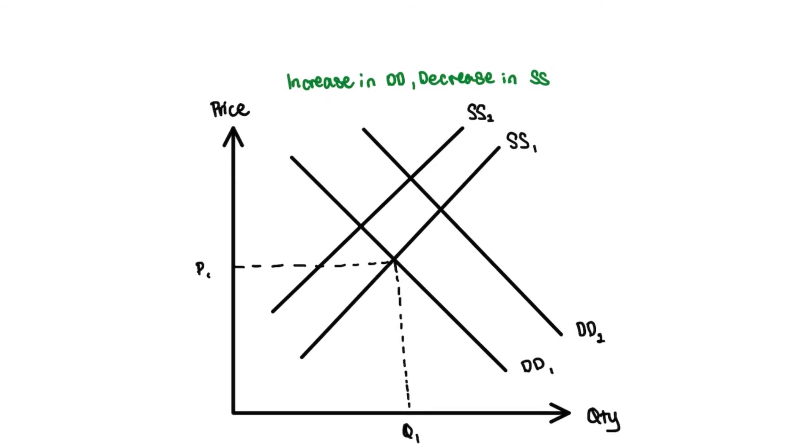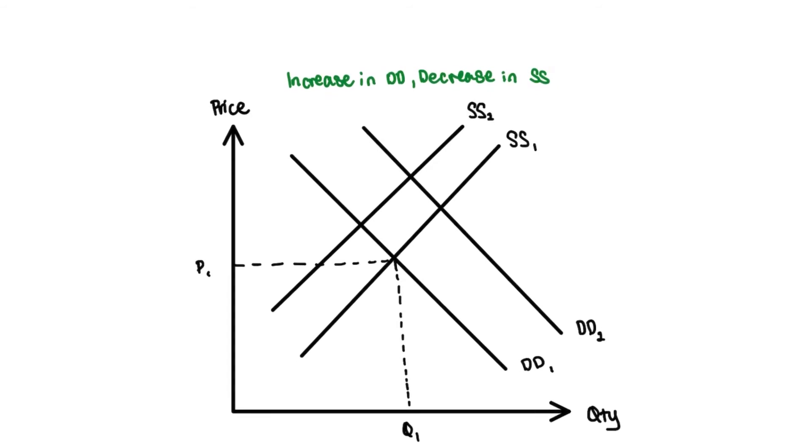Now what you want to do is locate where the intersection point of the two new curves is going to be. Just look for the intersection where the two new curves intersect. Before that, you can just go ahead and label the decrease in supply and the increase in demand with these arrows.